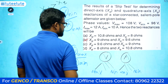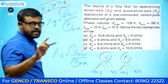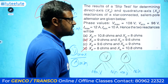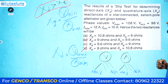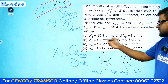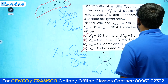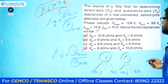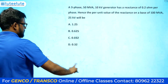Since Xd > Xq, options where Xd < Xq are eliminated. With Vmax = 108 V, Imin = 10 A, Vmin = 96 V, and Imax = 12 A: Xd = 108 / 10 = 10.8 Ω, and Xq = 96 / 12 = 8 Ω. This confirms Xd > Xq and gives us the correct answer.